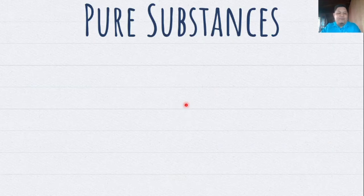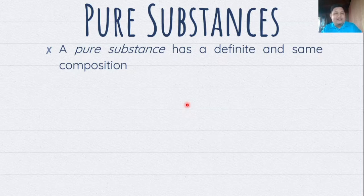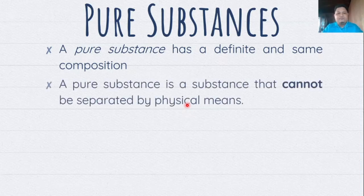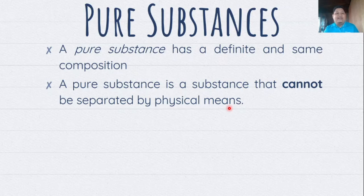Now another classification of matter we are going to talk about is pure substances. Pure substances have a definite and same composition. So unlike mixtures which do not have a fixed composition, pure substances are the total opposite because they are composed of constant composition. And unlike mixtures, pure substances cannot be separated by physical means — we cannot combine them physically and we cannot separate them physically either. In mixtures, we can combine pure substances physically to form a mixture and also separate them physically. But with pure substances, we cannot do both — we cannot separate or combine them physically to produce another pure substance.